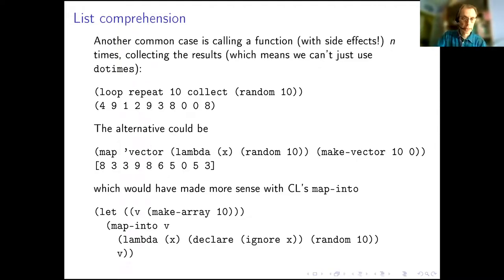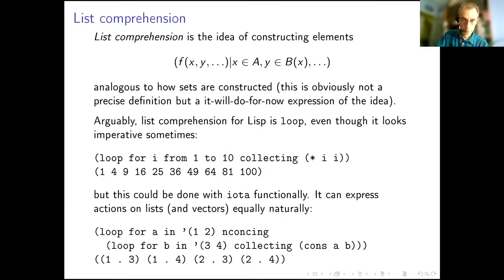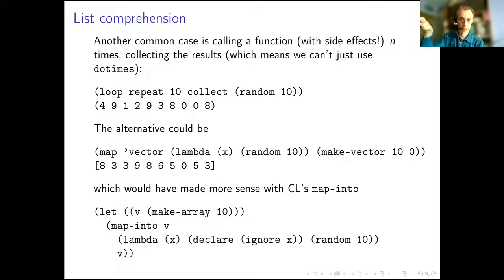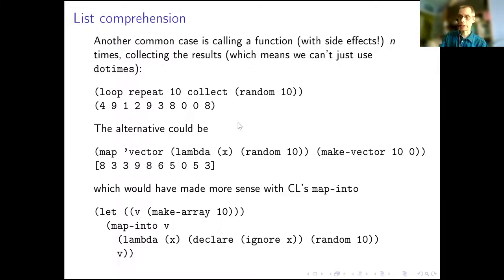If you have a function with side effects and want to call it several times — say, generating random numbers — the easier way is to say loop repeat 10 times collect those random numbers, rather than creating a vector of length 10 and mapping into it. If you're a purist you may not want to write for, but in my opinion using loop for these things is actually quite like list comprehension, which is considered quite functional. So it's not too bad.